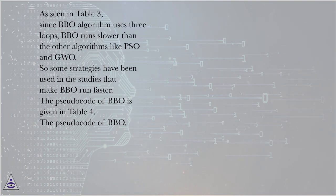So some strategies have been used in the studies that make BBO run faster. The pseudocode of BBO is given in Table 4.